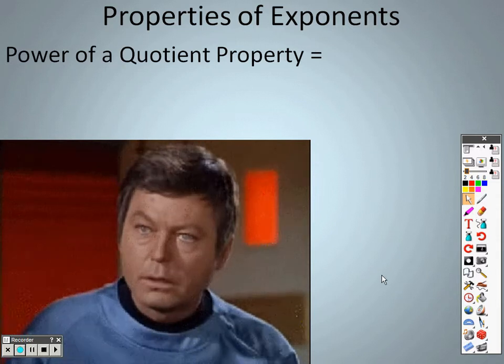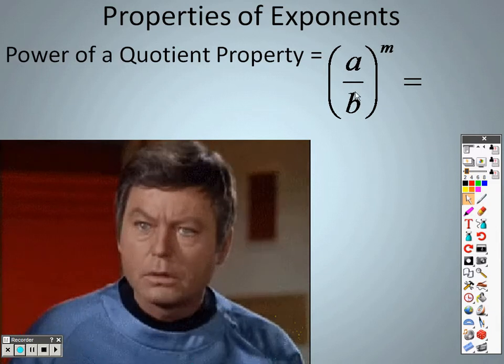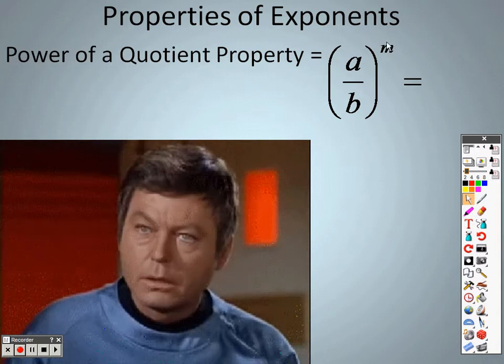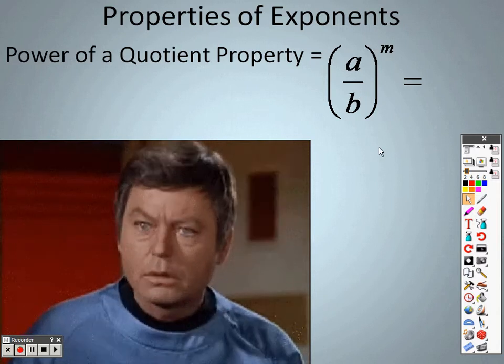We have the power of quotient property, and basically what that's saying is if you have a fraction on the inside of the parentheses, you can look at this as a to the 1st power and b to the 1st power, so I can take that m through to both items, so I'd end up with a to the m, b to the m.